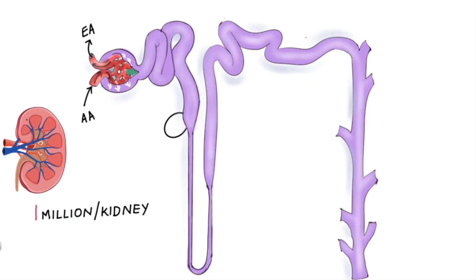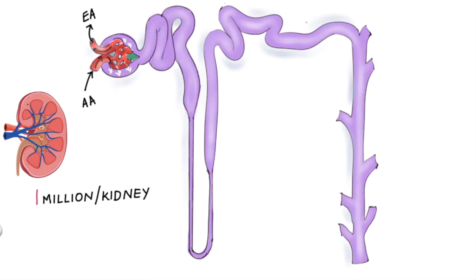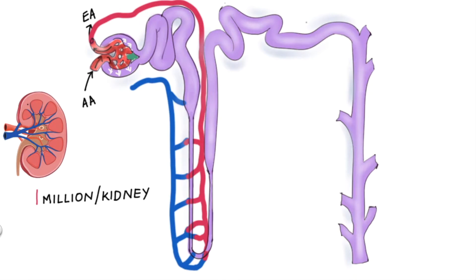For the most part, filtrate is reabsorbed back into the blood at several locations along the tubule. But how does the reabsorption occur? Well, the efferent arterial doesn't just end there. It branches out to form capillaries which surround the tubules of the nephron.